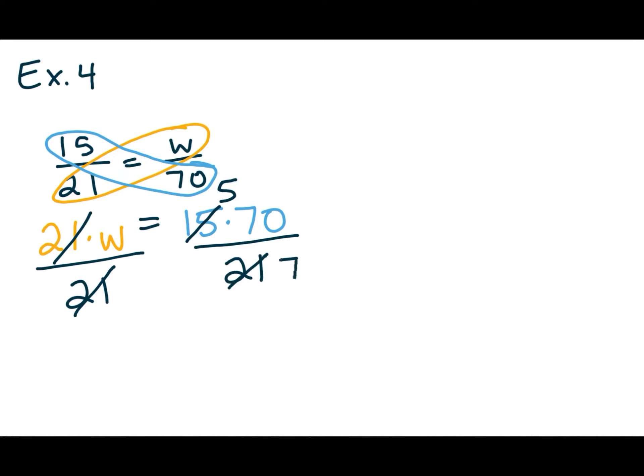And then I have an obvious 7 that I can factor out of this, and obviously a 7 I can factor out of that. So W turns out to be 5 times 10, which is 50.